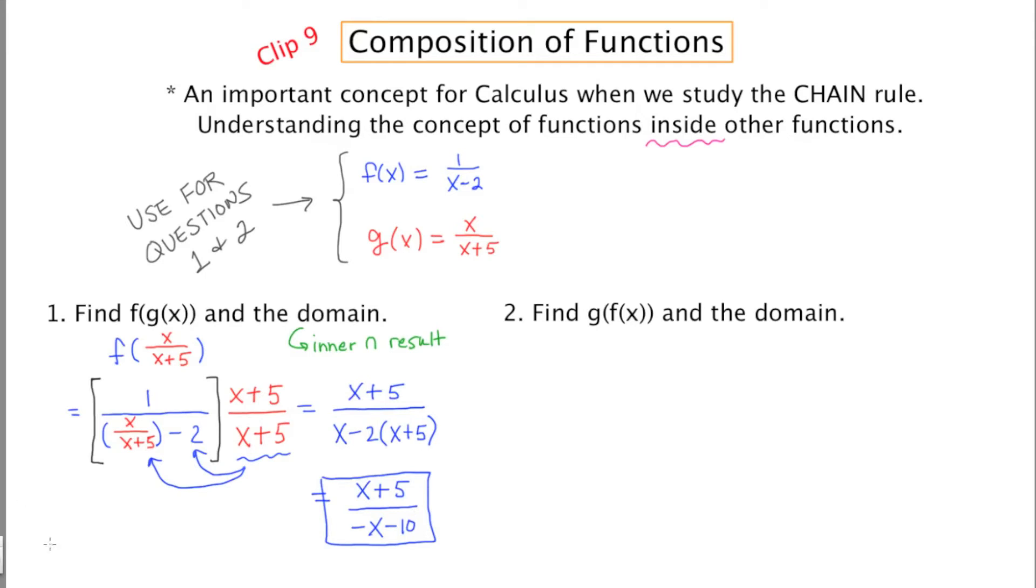So there are two things that x cannot be. X cannot be negative 5, and x cannot be negative 10. So that means the overall domain is going to be anything except those two things. So I'm going to say negative infinity to negative 10, union negative 10 to negative 5, union negative 5 to infinity. So the negative 10 and the negative 5 are the two things that it cannot be.